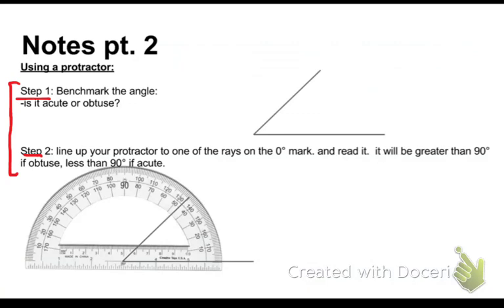Step one is to benchmark the angle. Now I've got this angle right here. I want to measure it. Well, the first thing we're going to do is sort of benchmark it. What would be a good benchmark for this angle? Well, I know a 90 degree angle is a right angle. I know that's 90 degrees, and this is less than 90 degrees. If it is less than 90 degrees, it is what we call an acute angle. I want to know that this is an acute angle and my answer is going to be less than 90 degrees.